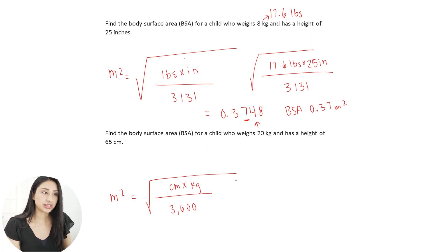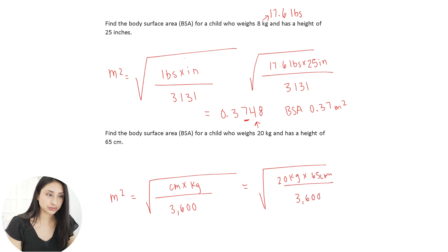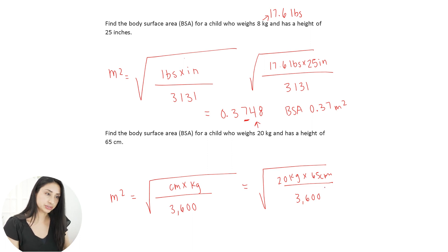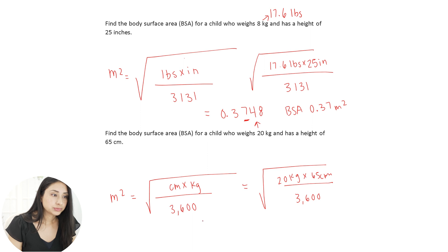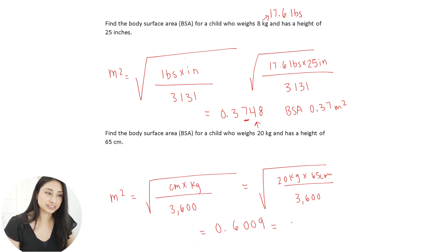For the second example, we're given centimeters and kilograms, so we use the other formula. Plugging in: the square root of (20 kilograms times 65 centimeters divided by 3,600) gives me 0.6009. Rounding to the tenths place gives a final answer of 0.6 meters squared.